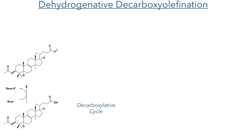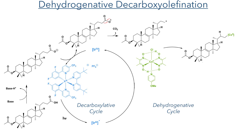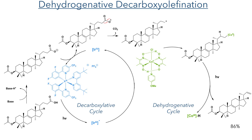This carboxylic acid was required for the dehydrogenative decarboxyolefination reaction. The substrate is firstly protonated, and the anion is then oxidised by an iridium(IV) species generated from an iridium catalyst bearing a bipy ligand and two pyridylphenyl ligands. The radical produced can then undergo decarboxylation, generating a primary radical upon the elimination of carbon dioxide. This primary radical is then trapped by a cobalt-oxime complex, forming a carbon-cobalt bond. Upon irradiation with light from blue LEDs, this can undergo a beta-hydride elimination to produce the target alkene in an 86% yield.